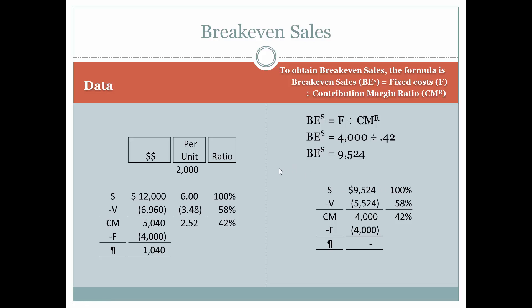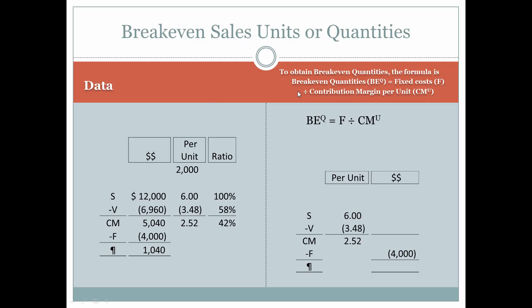Now, we can look at this calculation on a per-unit basis using different information from our grid. Break-even quantities (BE^Q) are calculated as fixed cost divided by the contribution margin per unit. Break-even quantities equals $4,000 in fixed expenses divided by the contribution margin per unit of $2.52, giving us 1,587 units — that's the number of units we need to sell in order to break even. To verify: 1,587 units times the sales price of $6 per unit equals $9,524, which matches our break-even sales figure.